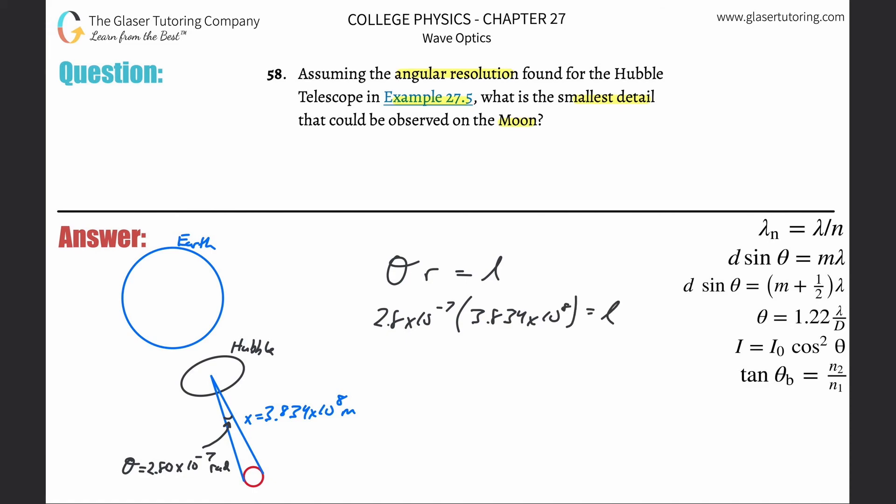Take out the calculator, plug it in. So 2.8 times 10 to the minus 7th, multiplied by then 3.834 times 10 to the 8th, and we get a value about 107. 107, 3 sig figs I guess. 107, and this is then meters.